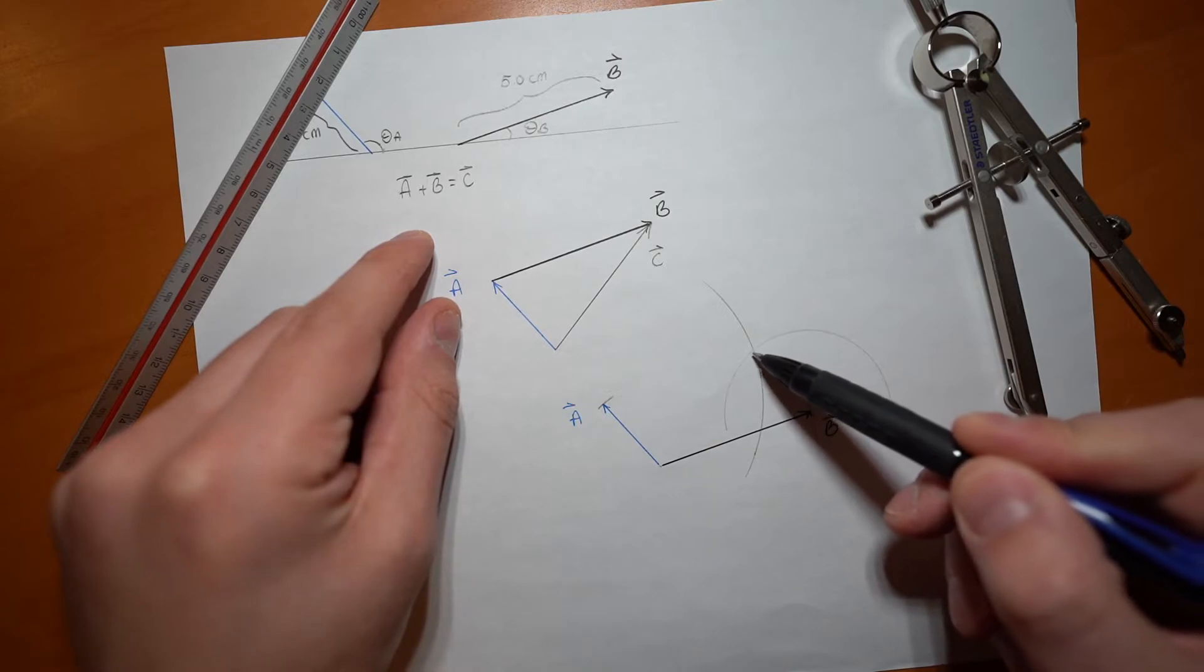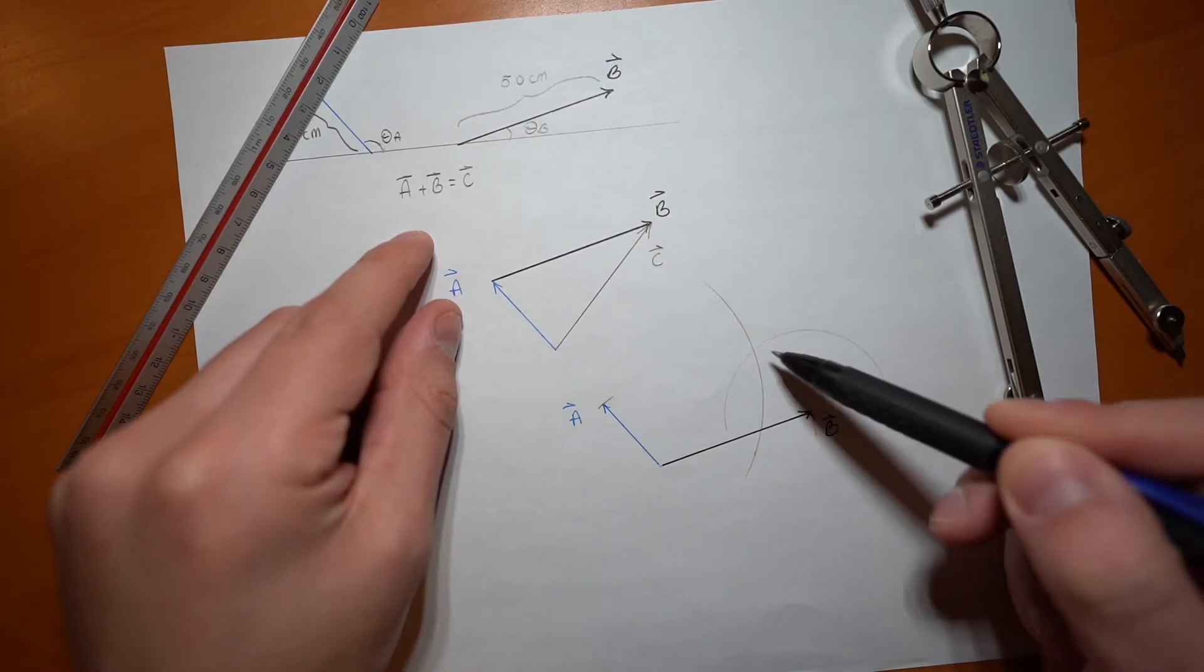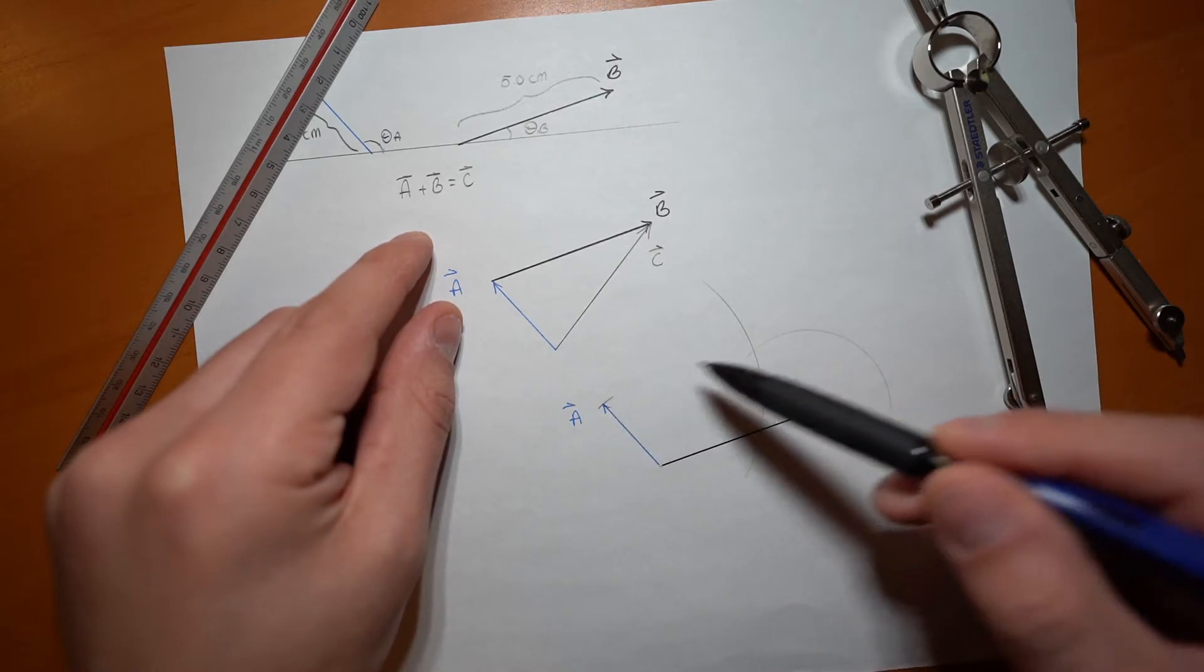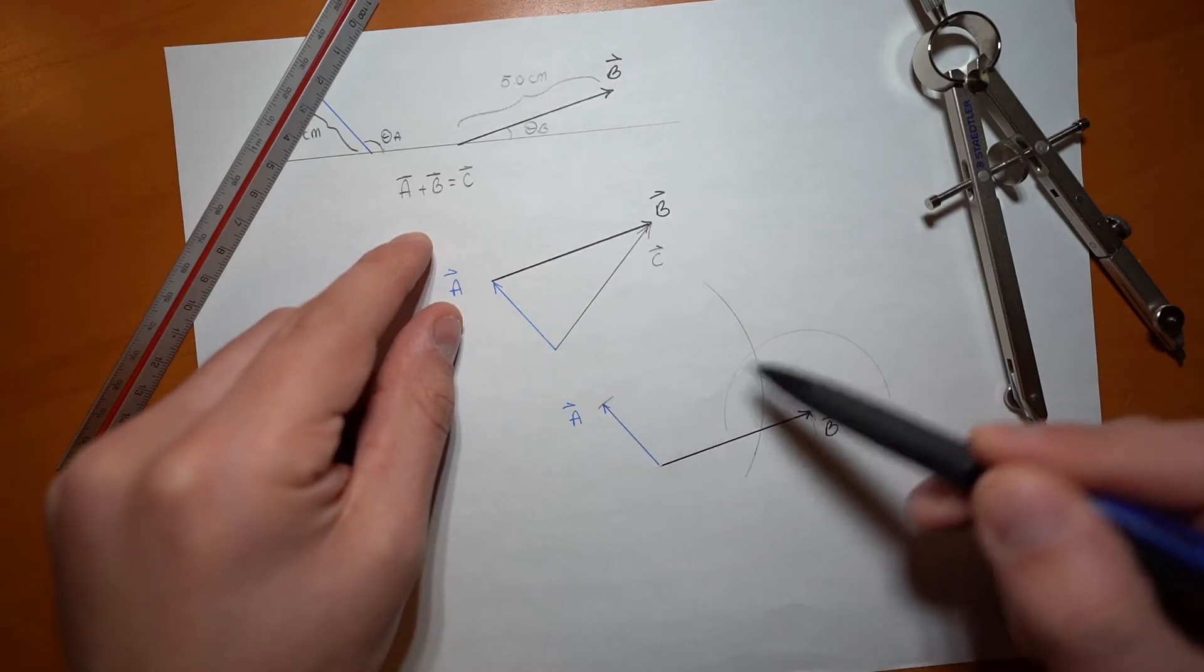Notice that they intersect right here. And that point of intersection is exactly the point where if you added B to A or A to B, you would get the resultant C.